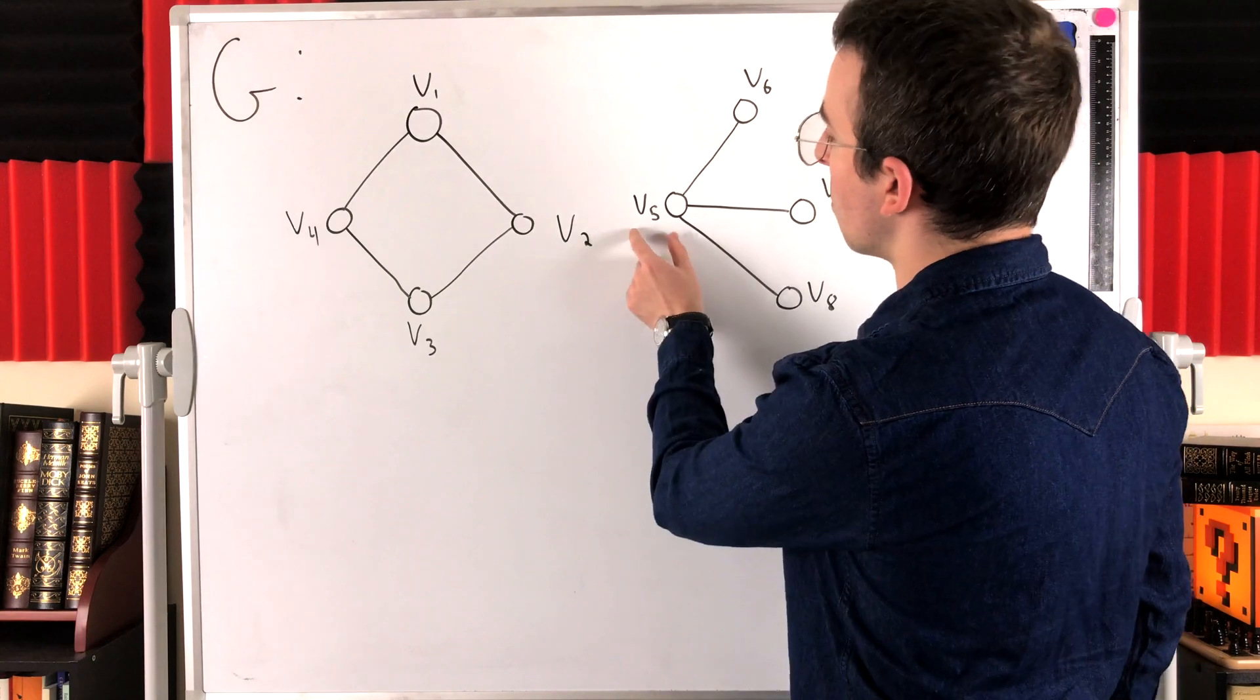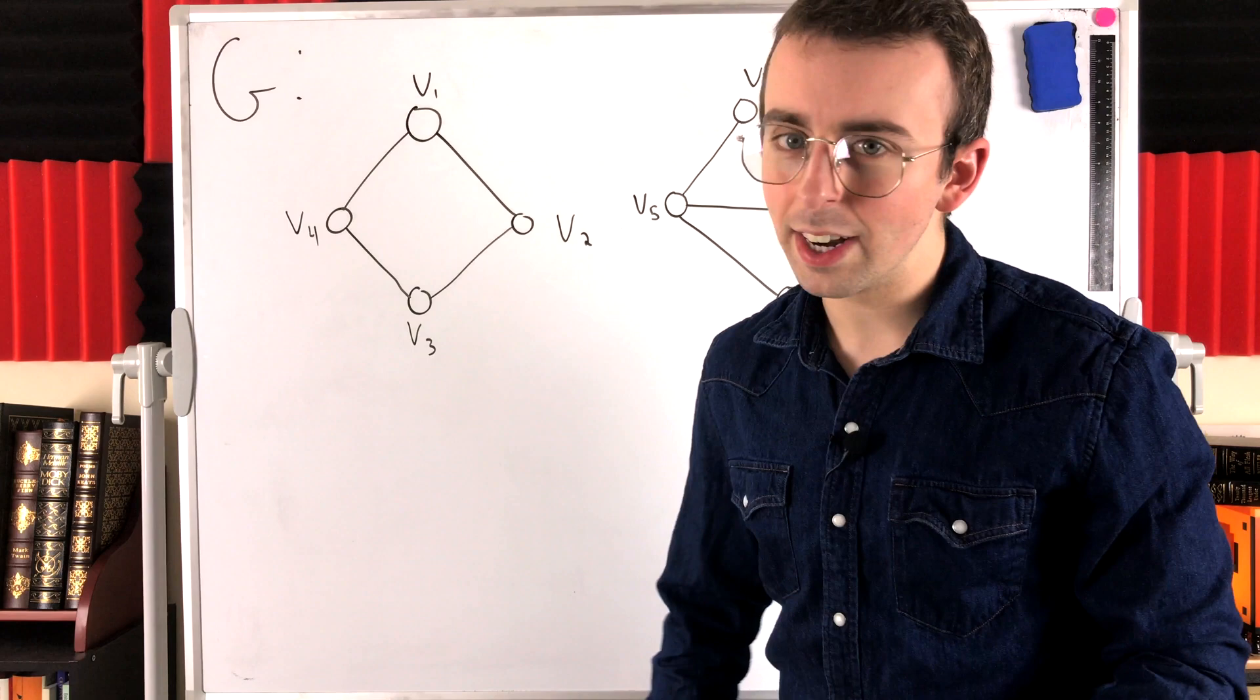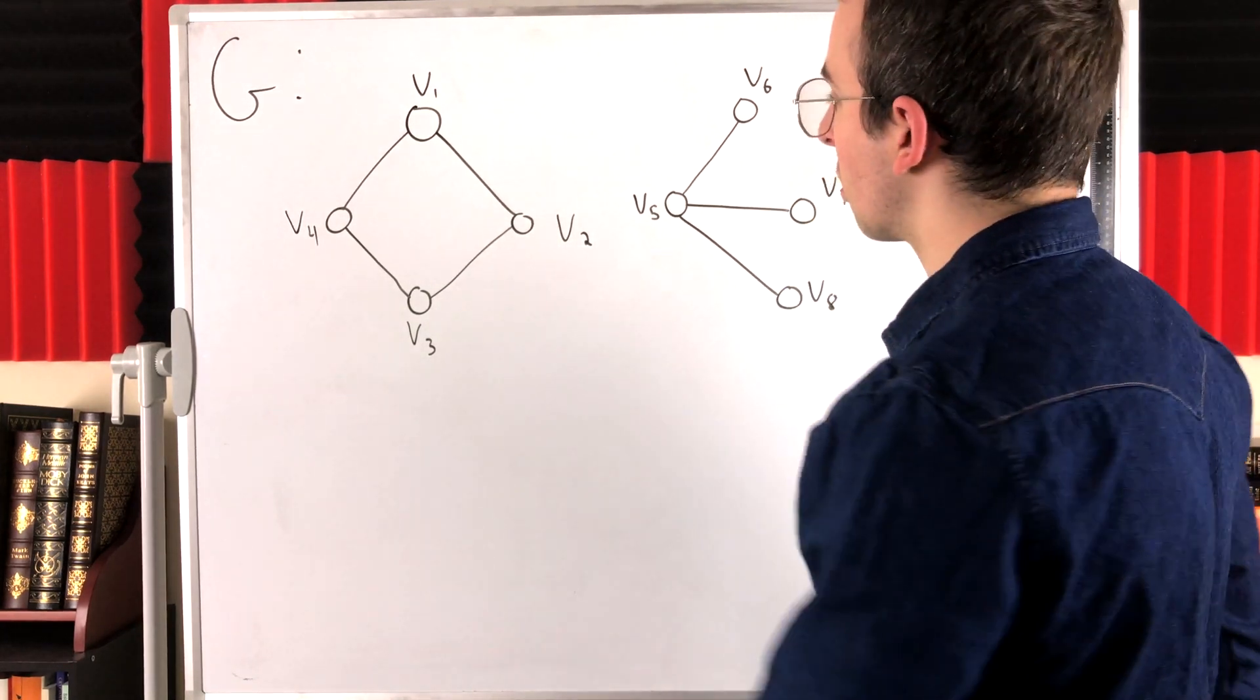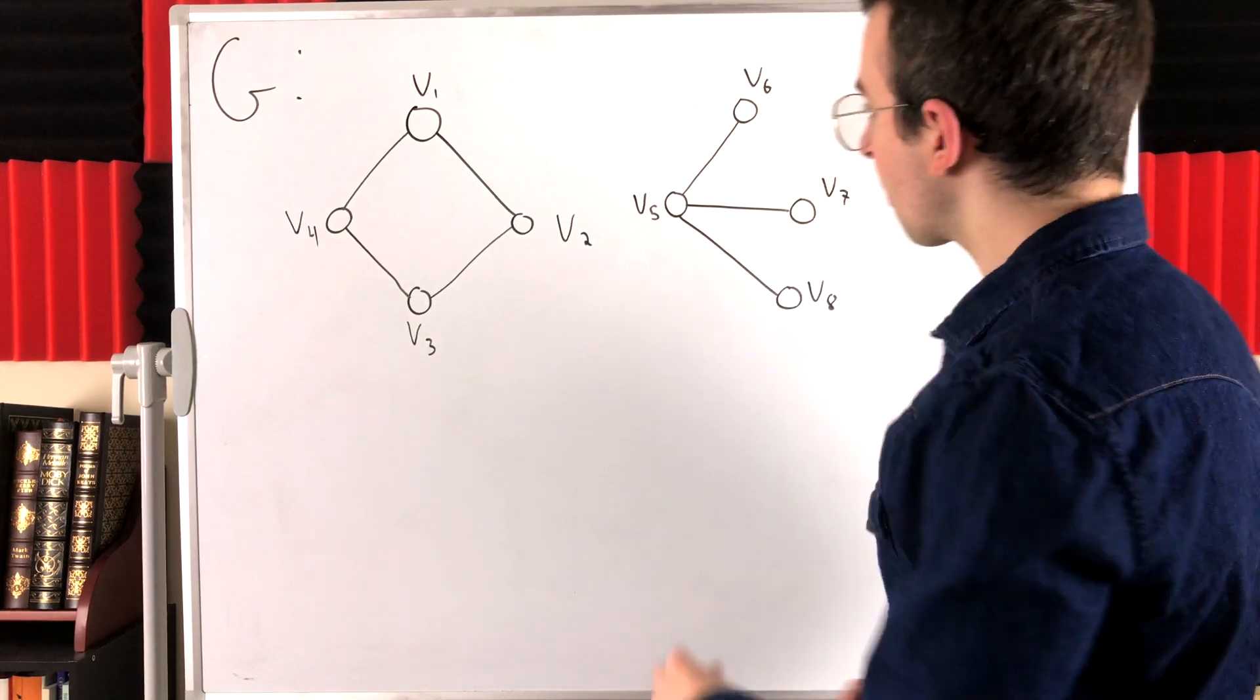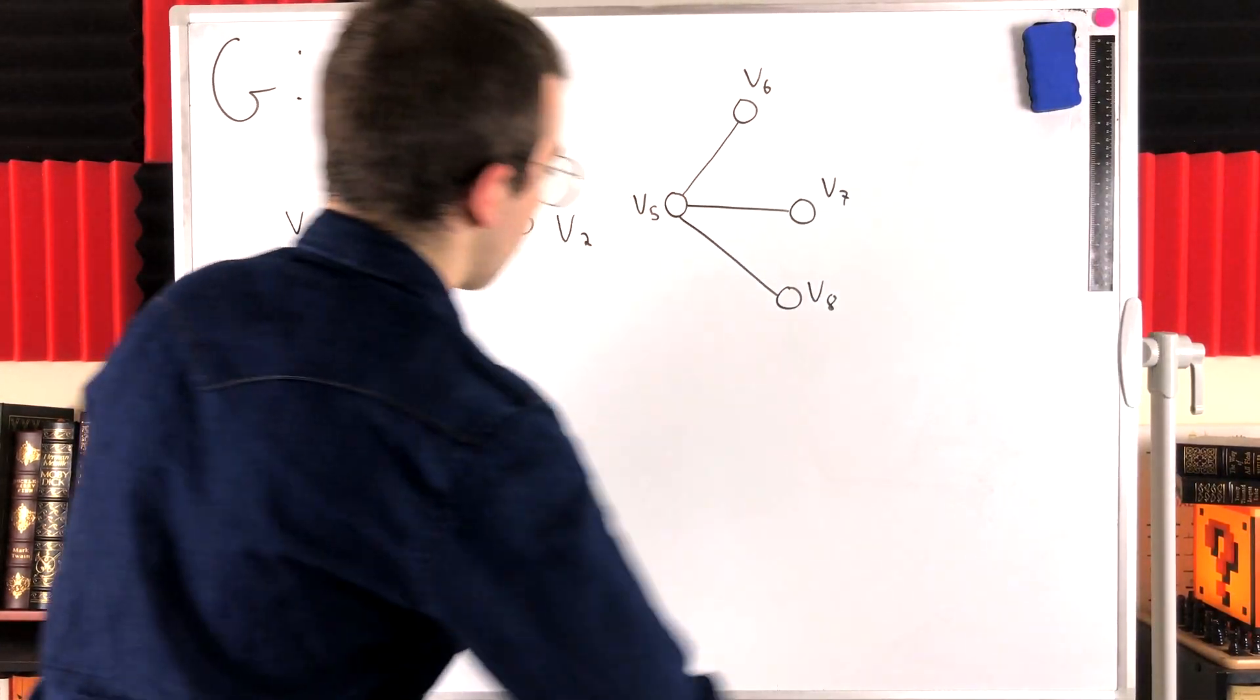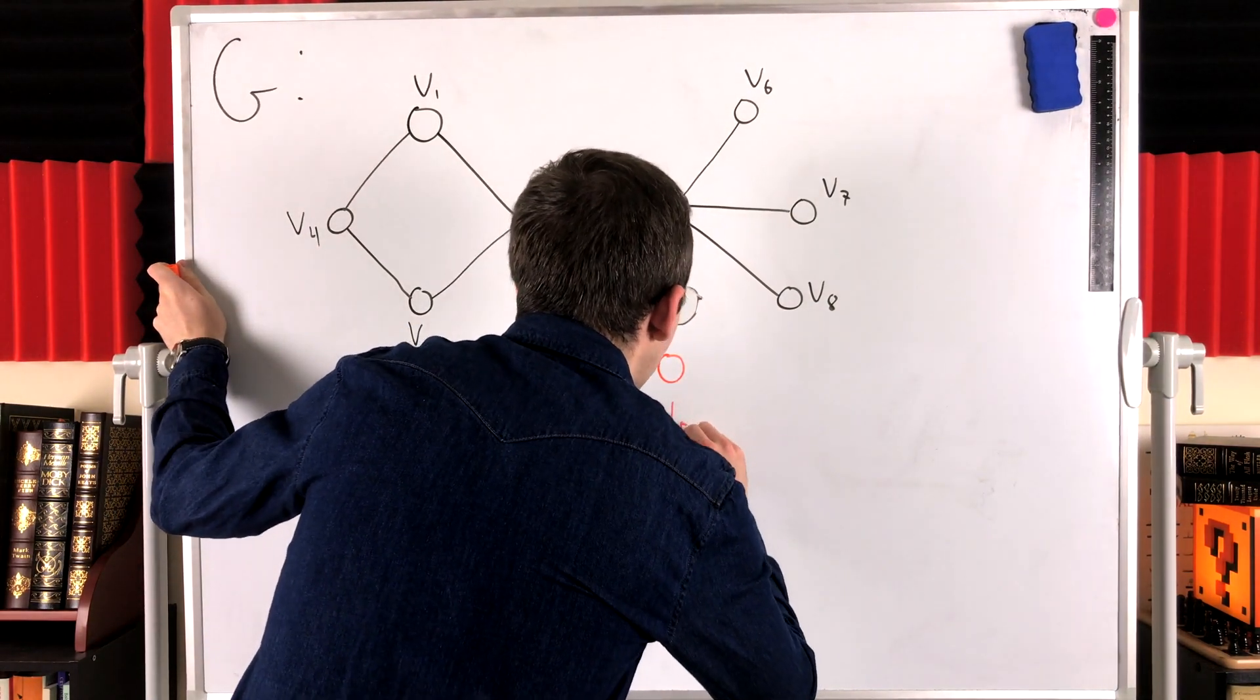But perhaps we know that V5 doesn't belong to the component that contains V1. And that's enough information to conclude that there's no V5 V1 path. Now this over here, of course, is another component of G. And we can use it to look at a couple more non-examples.